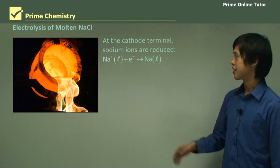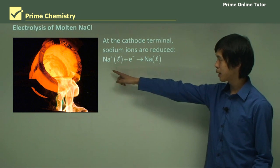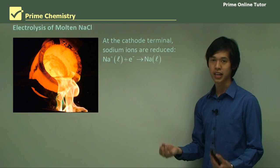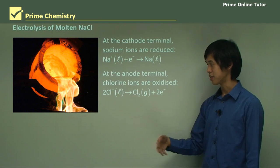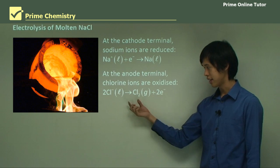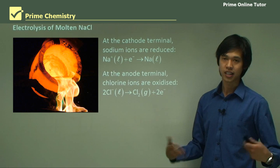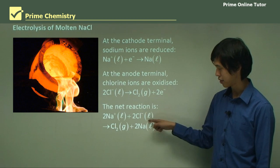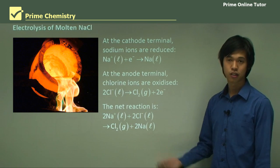So electrolysis of molten NaCl: At the cathode, which is where reduction happens, Na+ gets electrons added to it and you get pure Na liquid. At the anode, which is the oxidation section, the chloride ion releases electrons and becomes chlorine gas, Cl2. So the net reaction is Na+ plus 2Cl- gives you Cl2 gas and two sodium atoms.